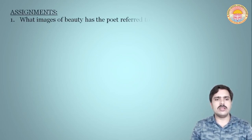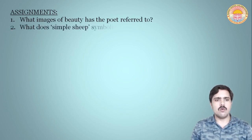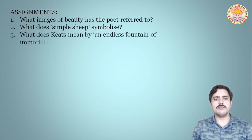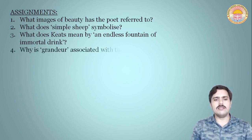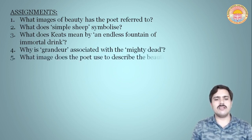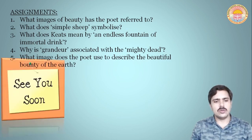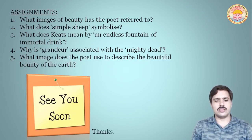So this is the time for assignments. Let's see them: What images of beauty has the poet referred to? Second, what does the sheep symbolize? Third, what does Keats mean by 'an endless fountain of immortal drink'? Fourth, why is grandeur associated with the mighty dead? Fifth, what image does the poet use to describe the beautiful bounty of the earth? I think that you enjoyed this poem very well. See you soon. Thank you, thanks for watching.